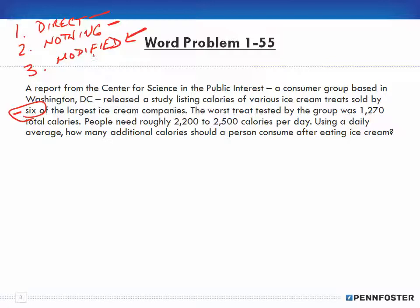A lot of people can identify what's directly related and what has nothing to do with the problem, but they struggle with information that needs to be modified. If it's not a number that's directly related, they tend to toss it out — and that makes the answer wrong. For this problem, 'six largest ice cream companies' has nothing to do with solving it. The worst treat was 1,270 total calories — I'll need that. And 2,200 to 2,500 calories is information that needs to be modified — you can't use either number directly or you'll get the wrong answer.